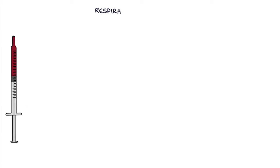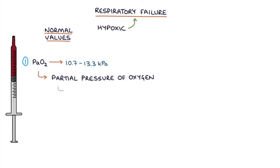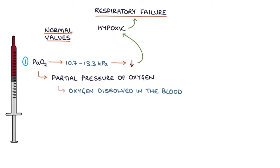Let's talk about respiratory failure. The first step when analysing an ABG is to determine if the patient is hypoxic, as hypoxia indicates respiratory failure. First, look at the PaO2, or partial pressure of oxygen — this is the amount of oxygen dissolved in the blood. A low PaO2 indicates hypoxia and respiratory failure.